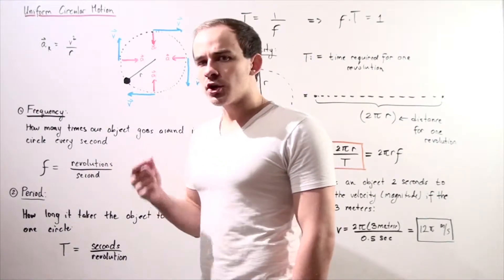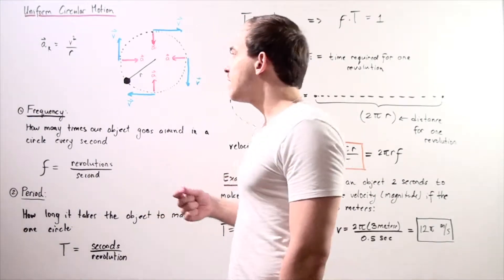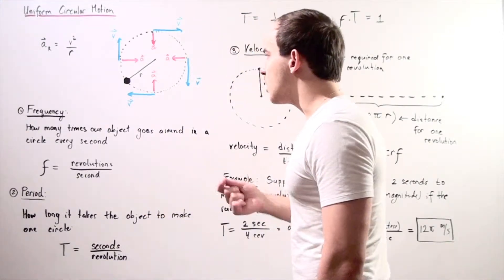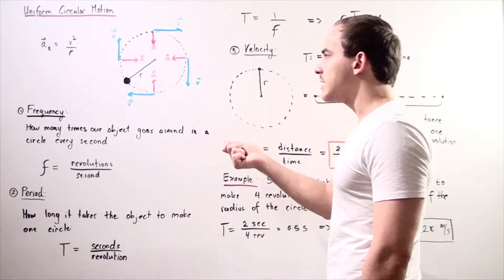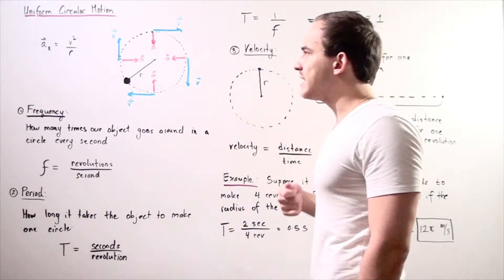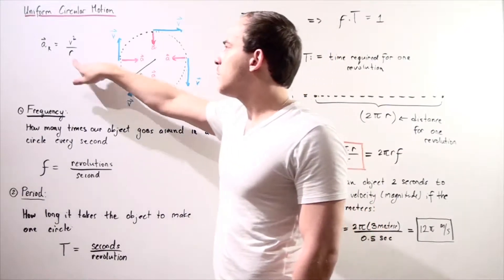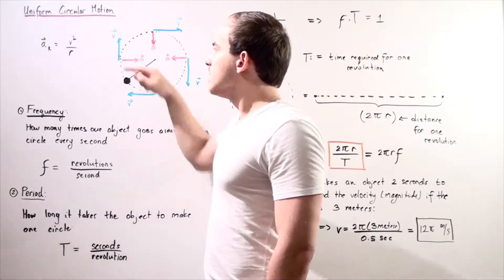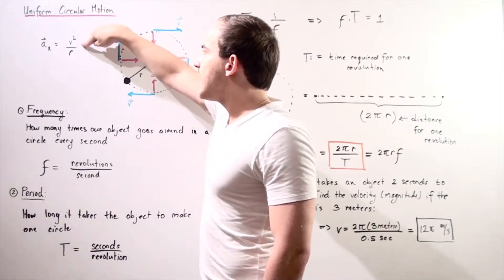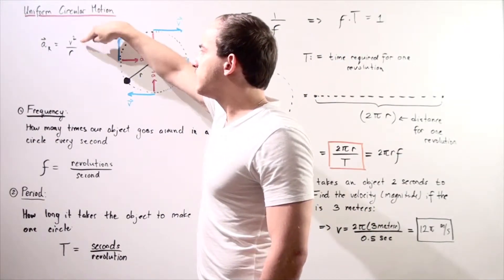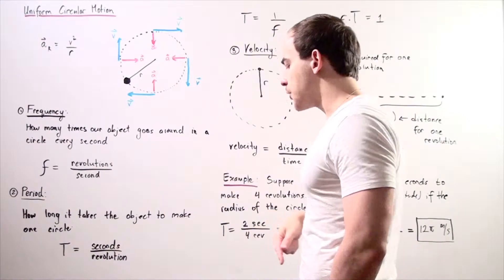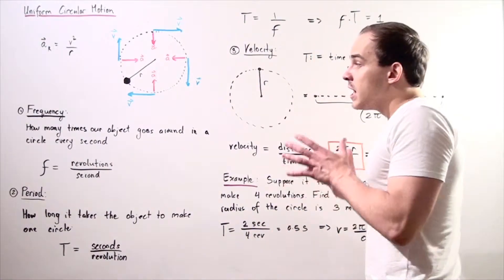The magnitude of our radial acceleration is given by the formula: we take the velocity squared and divide it by the radius of our circle.